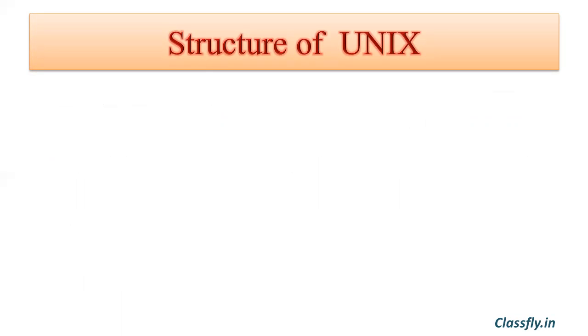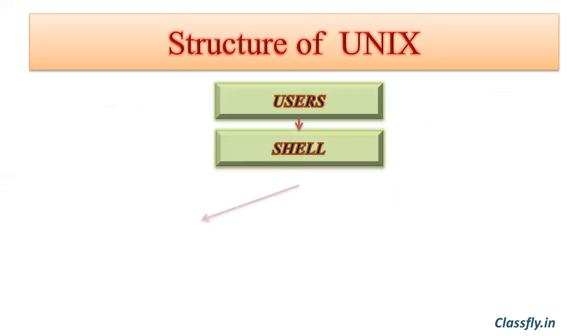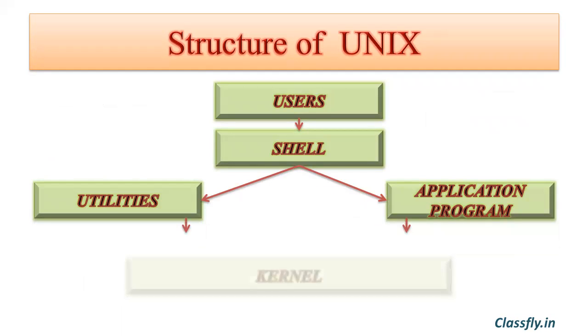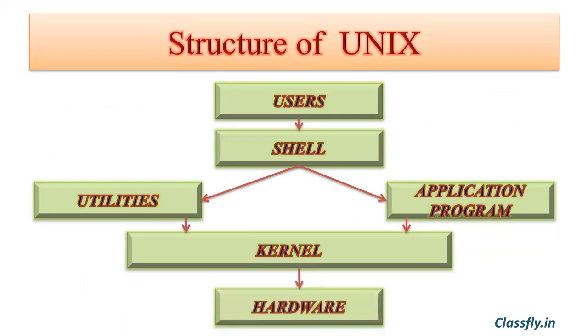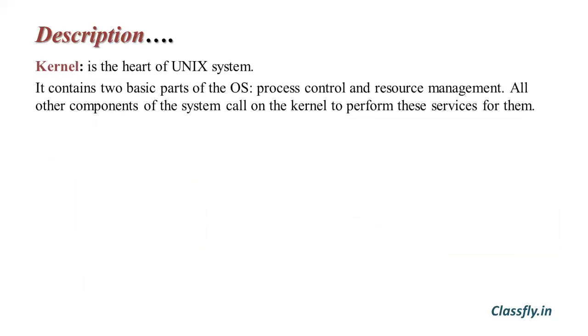Next we will study the structure of UNIX. The basic structure of UNIX looks like this. UNIX consists of four major components: the kernel, the shell, a standard set of utilities, and application programs.